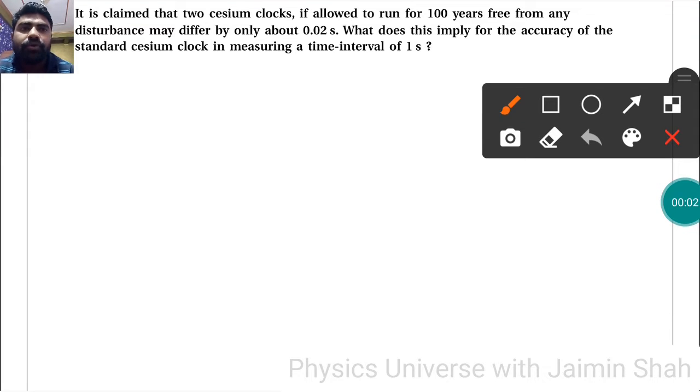The question states that two cesium clocks, if allowed to run for 100 years from any disturbance, may differ by only 0.02 seconds. What does this imply for the accuracy of the standard cesium clock in measuring a time interval of one second?